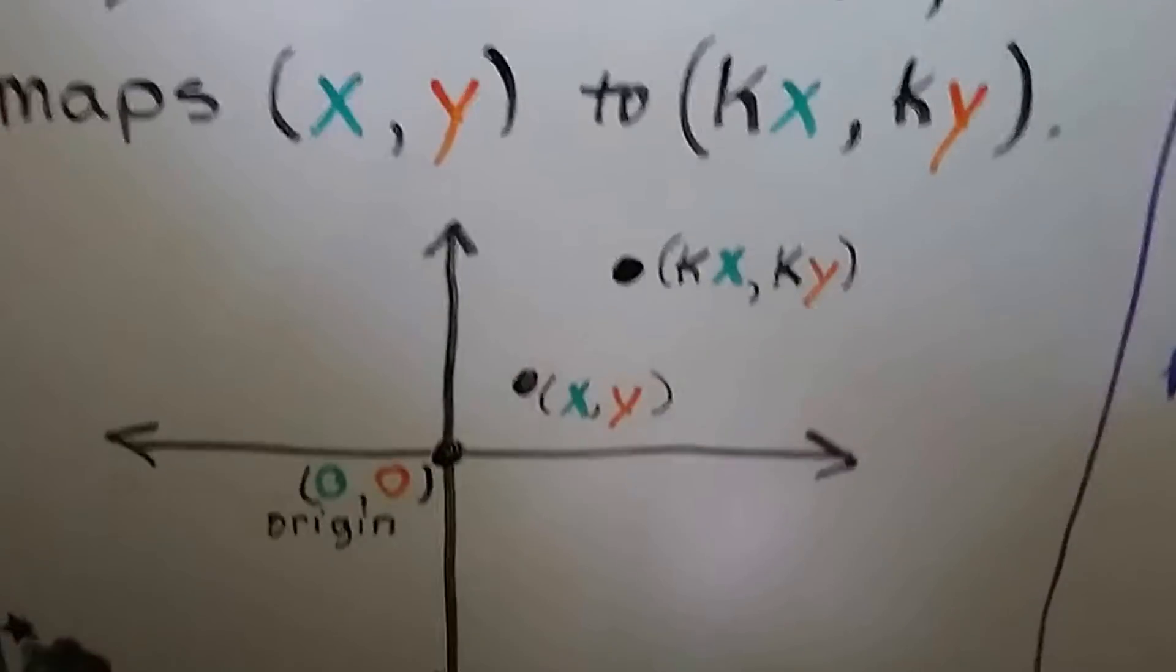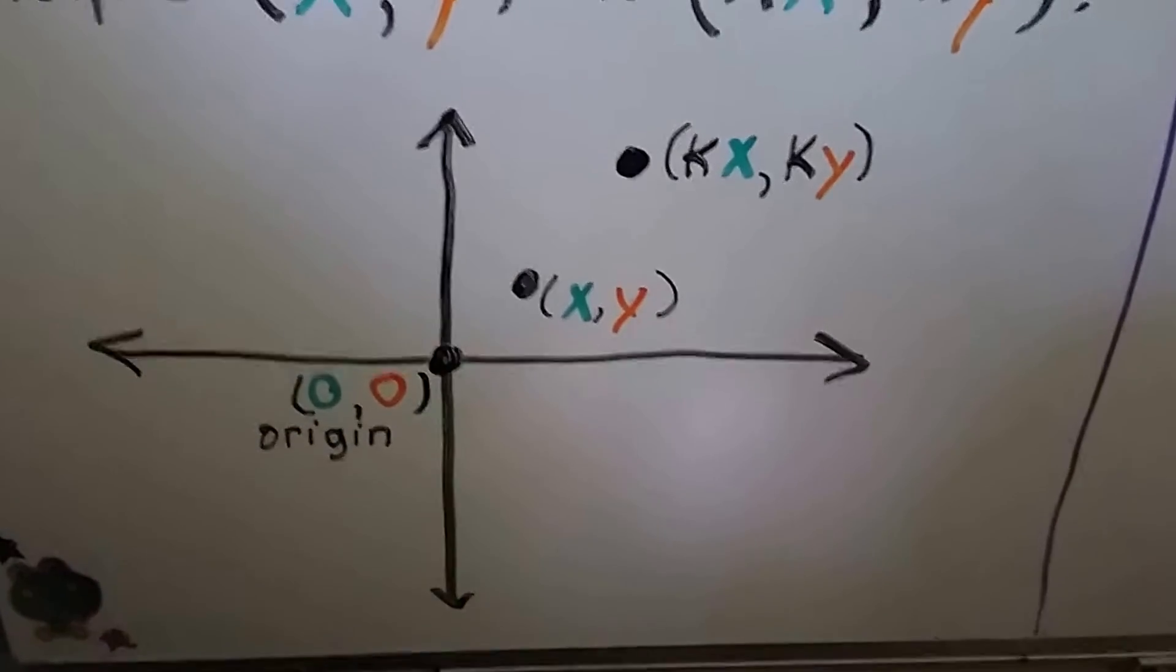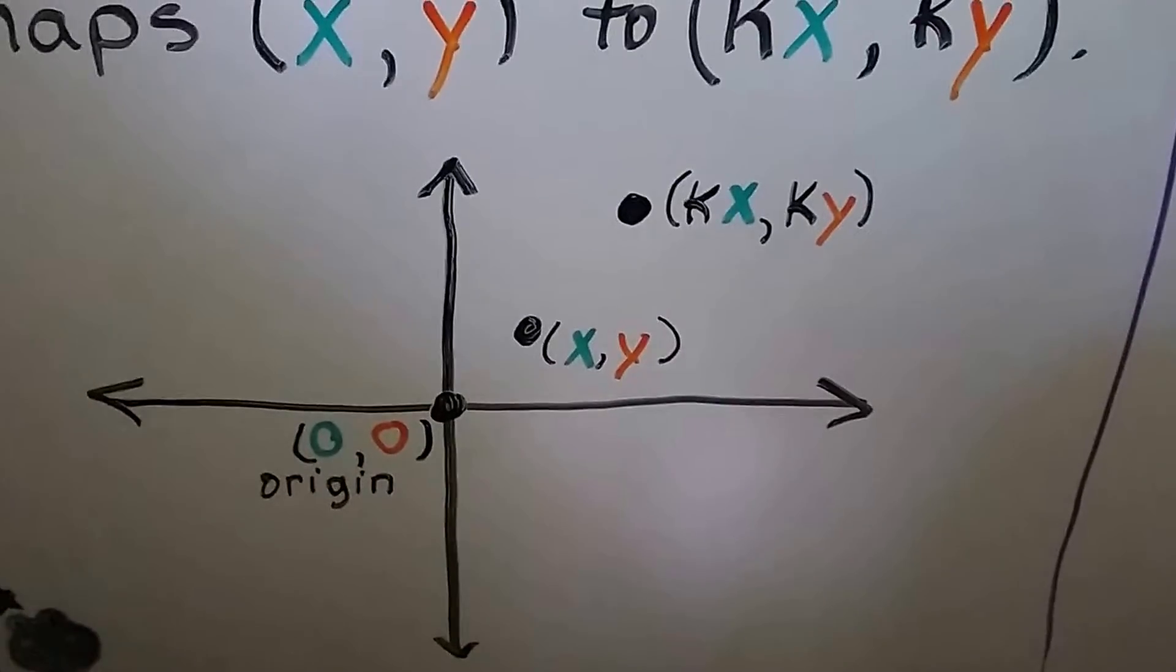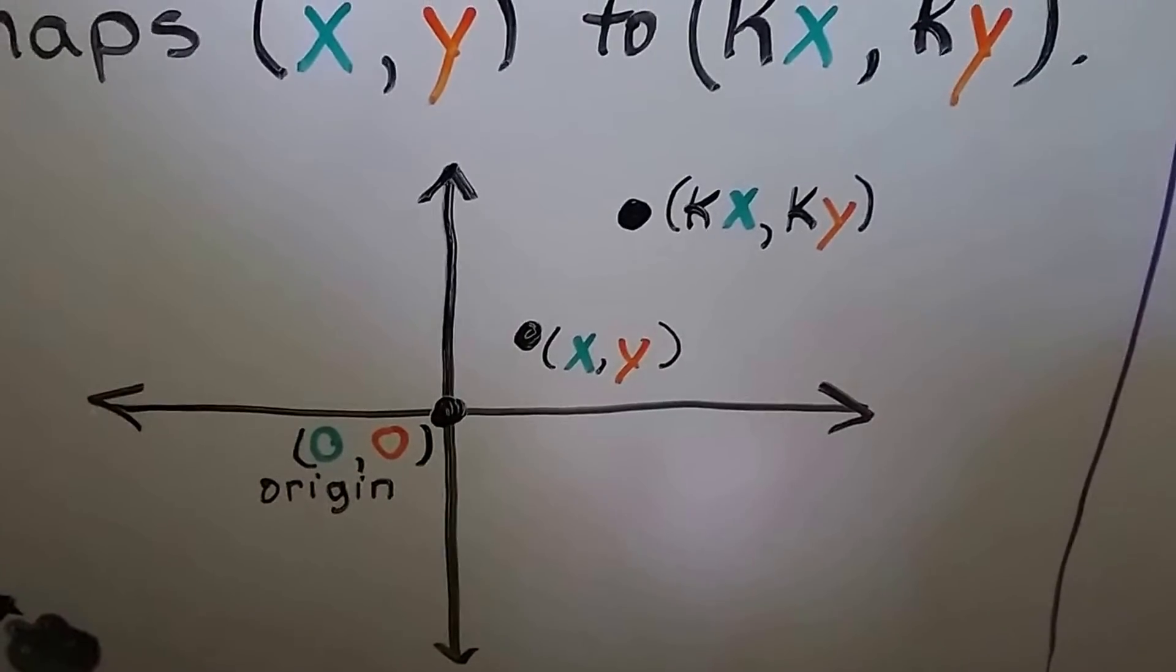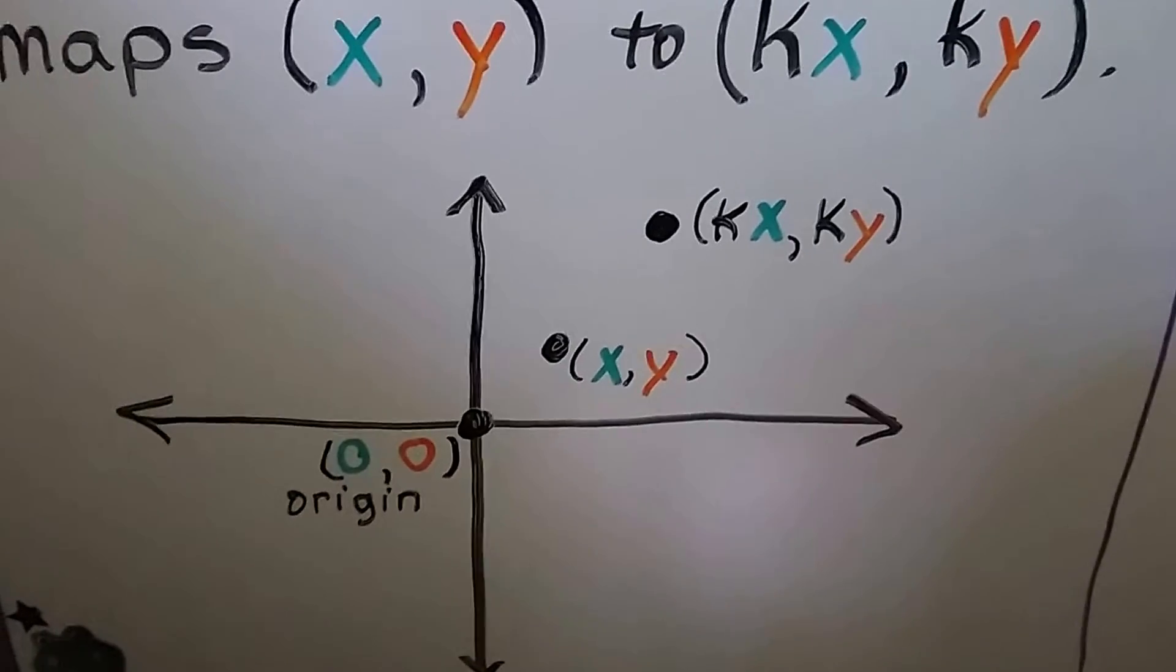So on a coordinate plane, you can see our origin, and if we have point (x, y), it'll map to (kx, ky). It'll move that point (x, y).